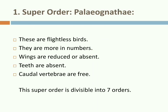Next is Palaeognathae, also known as Ratitae. These are large-sized flightless birds that arose from birds with flight. Wings are not much developed. Feathers are without barbules. Flight muscles are very weak, making them flightless birds. Feathers are not uniformly distributed on the body. The palate is desmognathous type. Males possess copulatory organs. Pygostyle is not developed. Palaeognathae is divided into seven orders: Struthioniformes, Rheiformes, Casuariiformes, Apterygiformes, Tinamiformes, Dinornithiformes, and Aepyornithiformes.